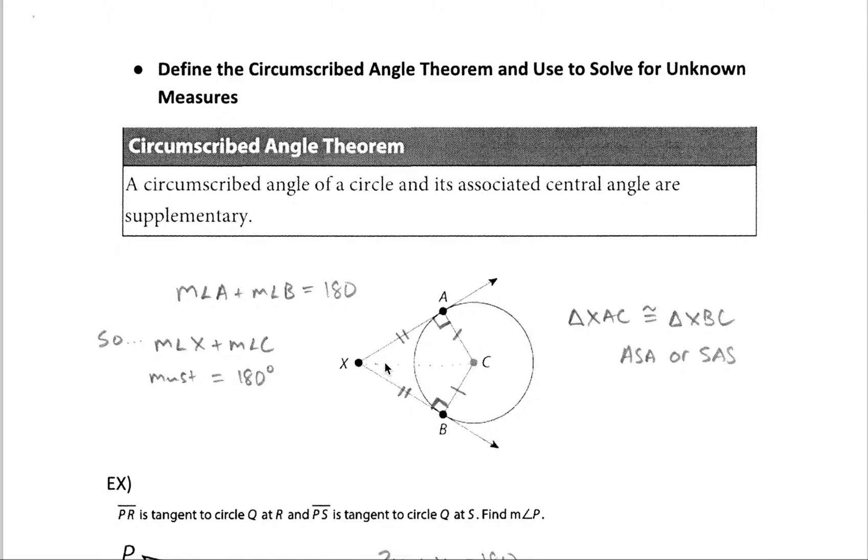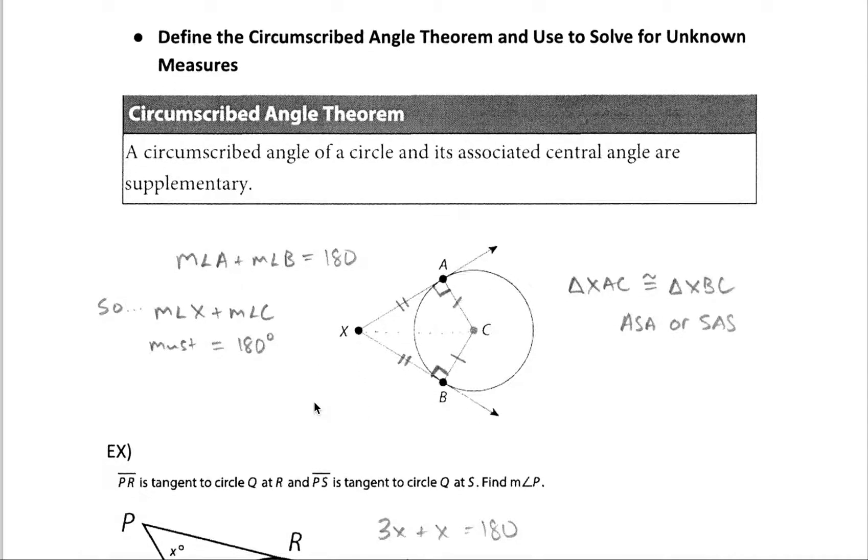So why are they supplementary? Well here's a quick way to just prove it. Because we have tangent lines intersecting a radius, we know we have a right angle like we just defined previously. So if we have 90 degrees here and 90 degrees in this quadrilateral shape, the quadrilateral only has 360 degrees inside of it. So if we subtract what we know right here, 180 degrees, we're going to be left with 180 degrees for these two angle measures. So that's why they're supplementary.